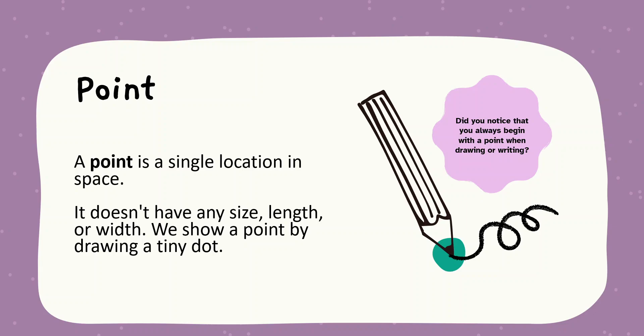Point. A point is a single location in space. It does not have any size, length or width. We show a point by drawing a tiny dot. Did you notice? You always begin with a point when drawing or writing. For example, if I want to draw a straight line, I will begin with a point.